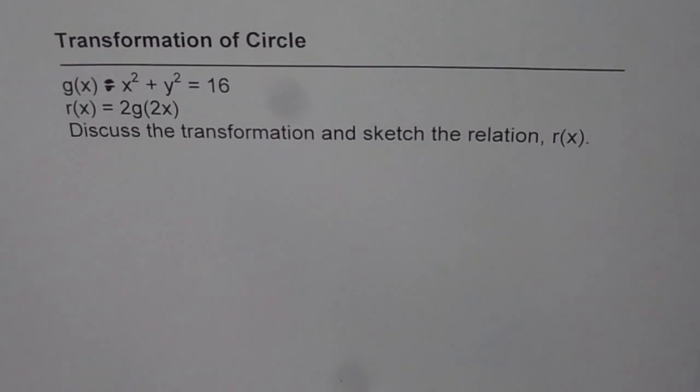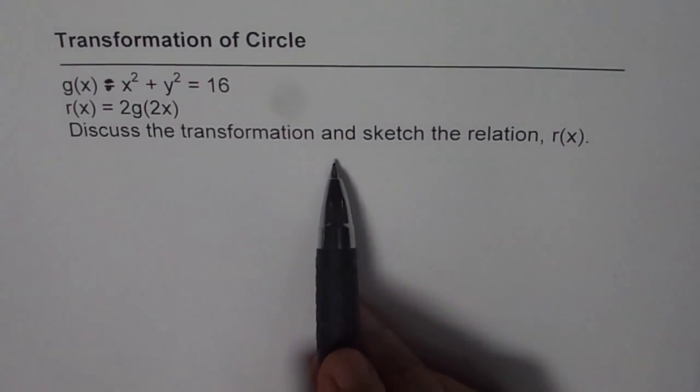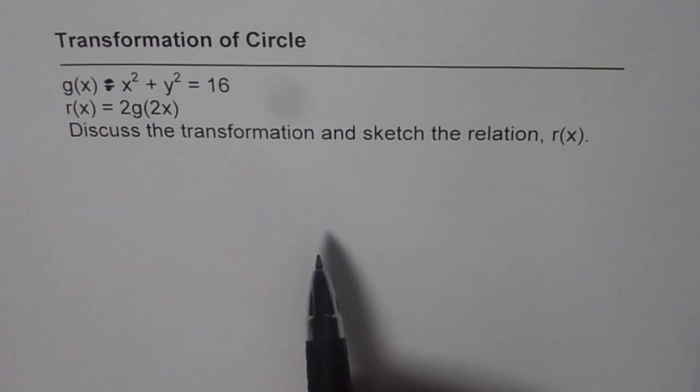I am Anil Kumar and in this video we are going to discuss transformation of circle. g of x is x square plus y square equals to 16 and r of x is the transformed relation for g of x which is 2 times g of 2x. Discuss the transformation and sketch the relation r of x.